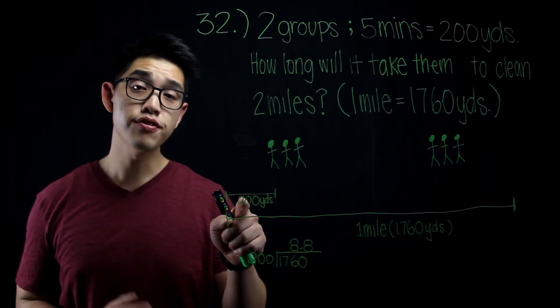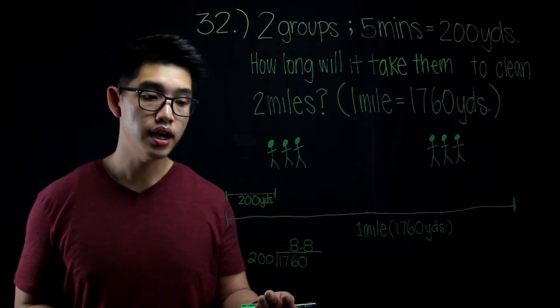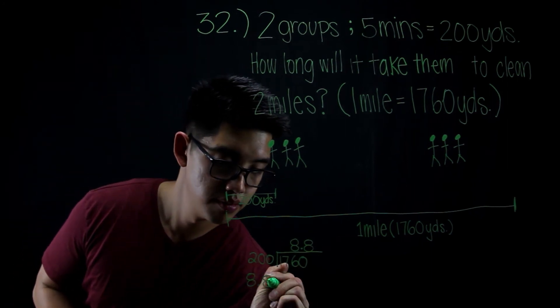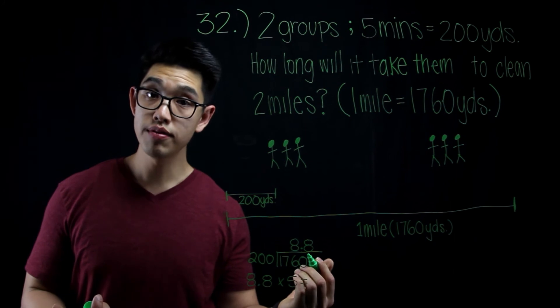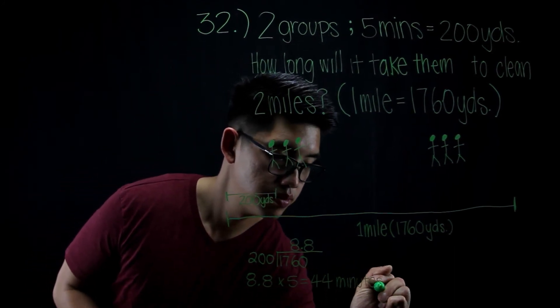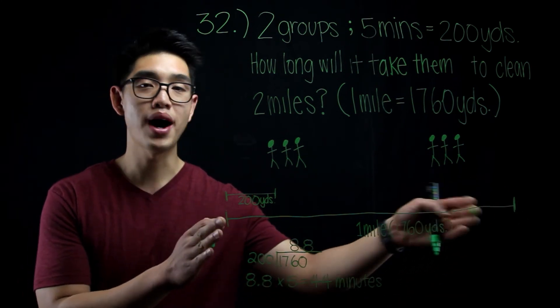Now, since I know that it takes them 5 minutes to clean up 200 yards, I need to multiply 8.8 times 5. Which will give me 44. This means that it'll take both groups 44 minutes to clean up 2 miles.